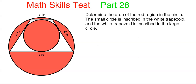A few points worth noting: whenever it is stated that the small circle is inscribed within the white trapezoid, that means the smaller circle is 100% within the white trapezoid and the edges of the circle align with the edges of the trapezoid. Similarly, the white trapezoid being inscribed in the larger circle means the trapezoid is 100% within the larger circle and the corners of the white trapezoid align with the edges of that larger circle.